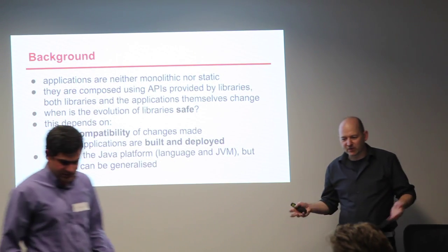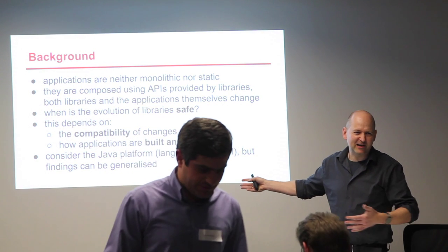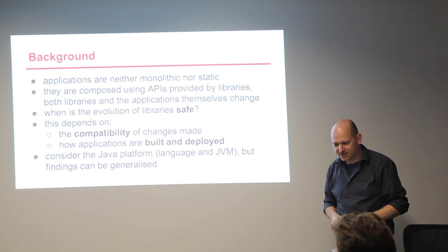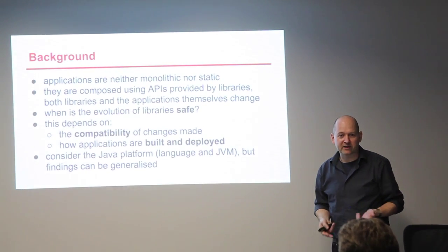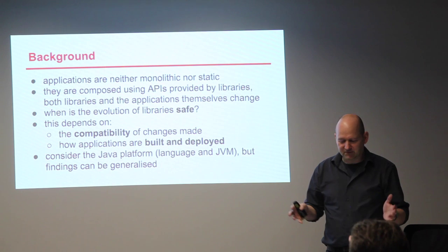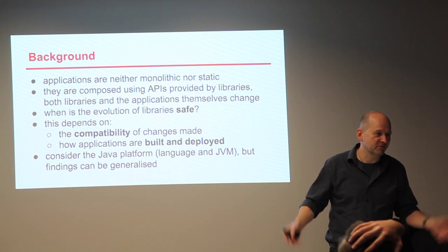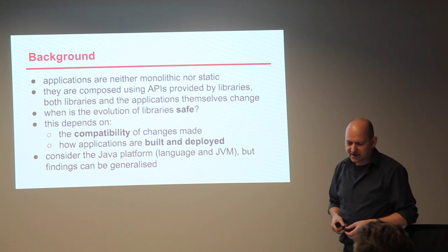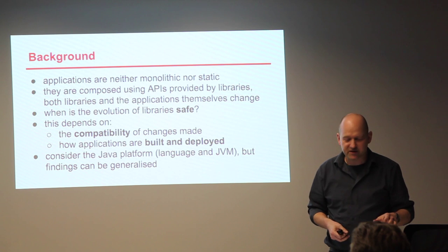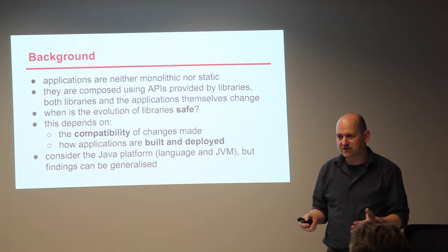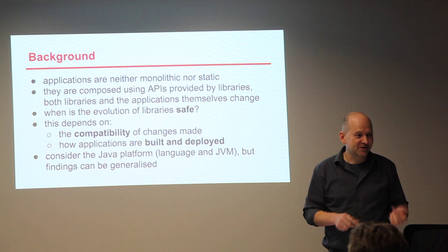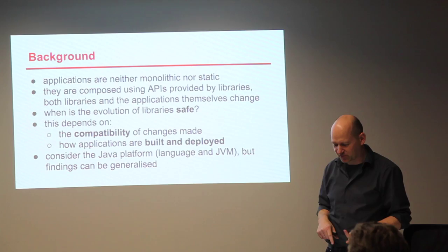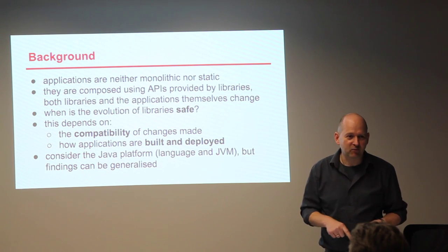Background: when we write modern applications, we write them modularly — we don't develop everything from scratch, we use libraries or frameworks. And then stuff changes all the time. The real question I'm interested in is: when is this change safe? When we upgrade a library, when is it safe? That surprisingly depends on two things: it depends on the change we make and whether it's compatible, but it also depends on how we build and deploy our applications.